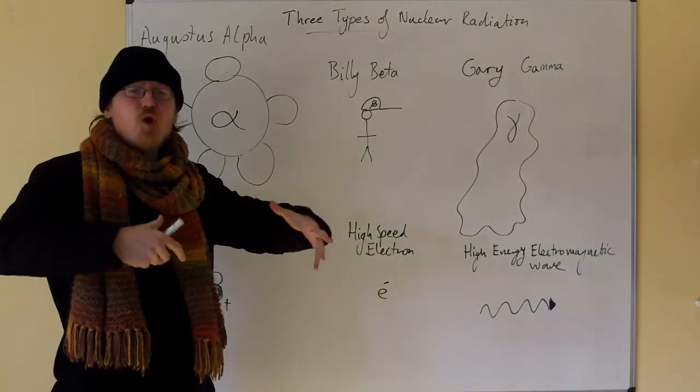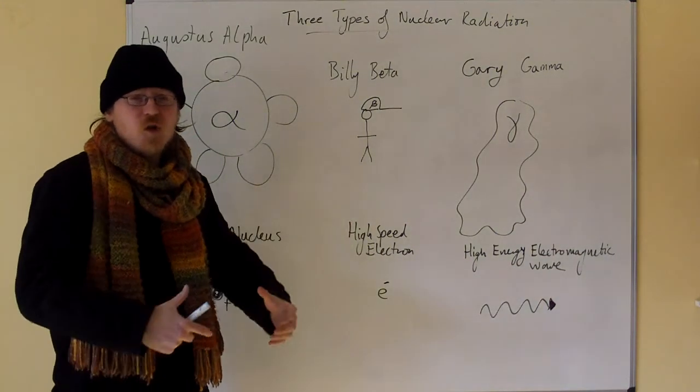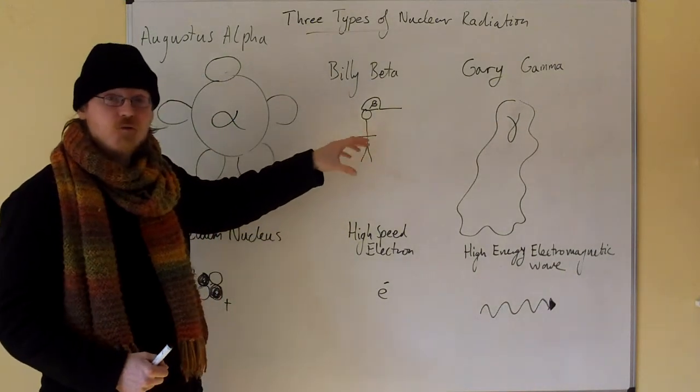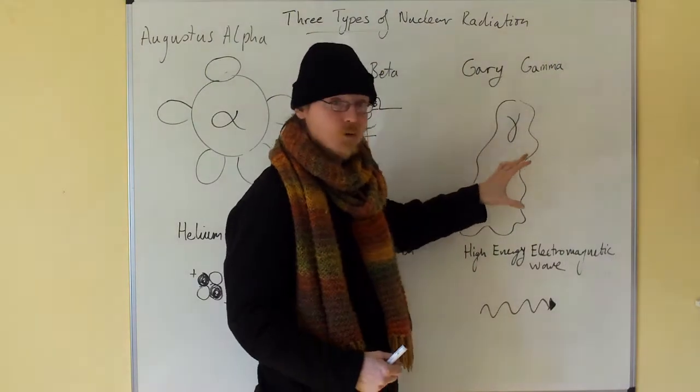Now Augustus Alpha is a huge particle, a huge fat beast. Billy Beta is a little scrawny kid, and Gary Gamma is a ghost.